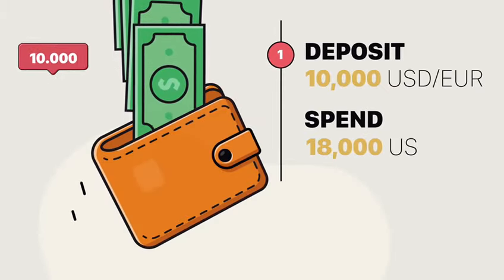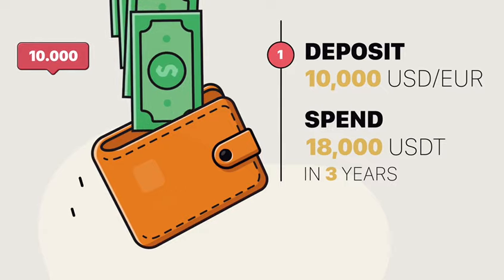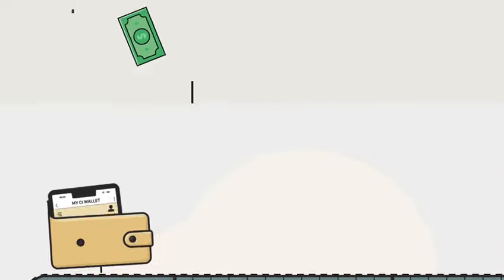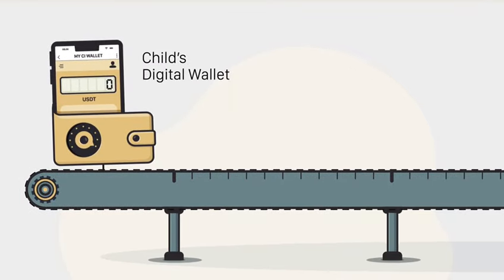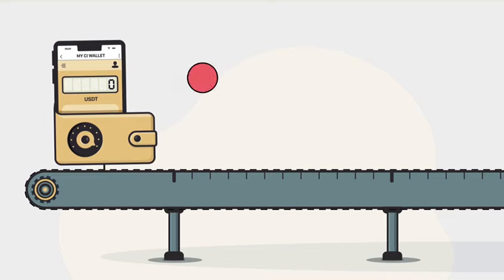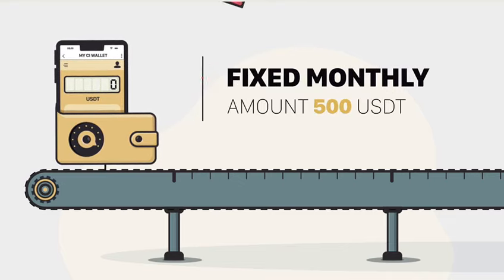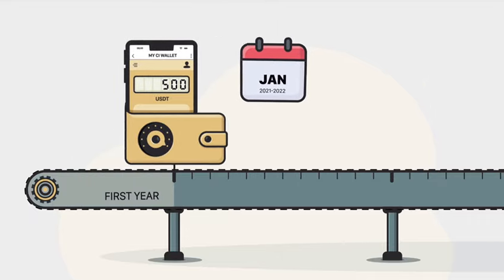Here, we deposited $10,000. Giving an allowance of $500 to the student to pay for rent, groceries, school, or simply cost of living.